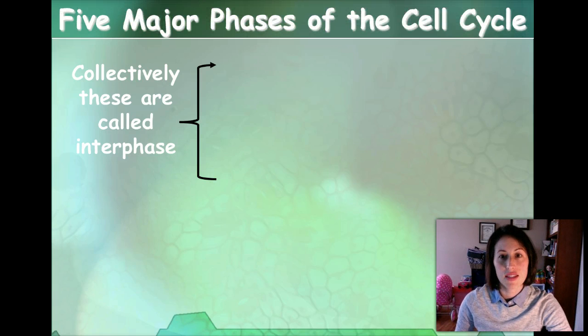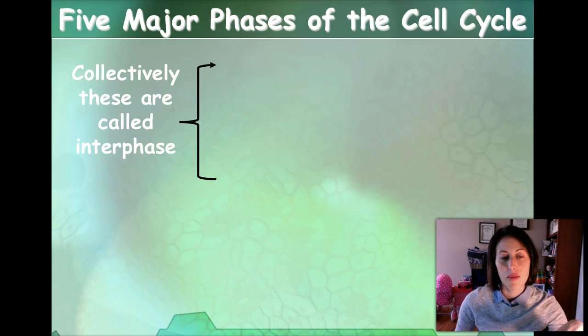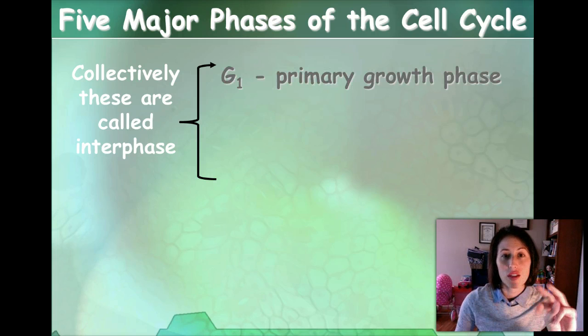So there are five major phases in the cell cycle, and when we talked about how DNA replicates, we talked very briefly about interphase. Interphase is actually made up of three different steps.